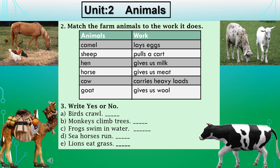Now open up page 14. Here you can see three questions: question number two, question number three, and question number four. In question two, you have to match the farm animals to the work each one does. There are two columns — in the first column, farm animals are listed: camel, sheep, hen, horse, cow, and goat.